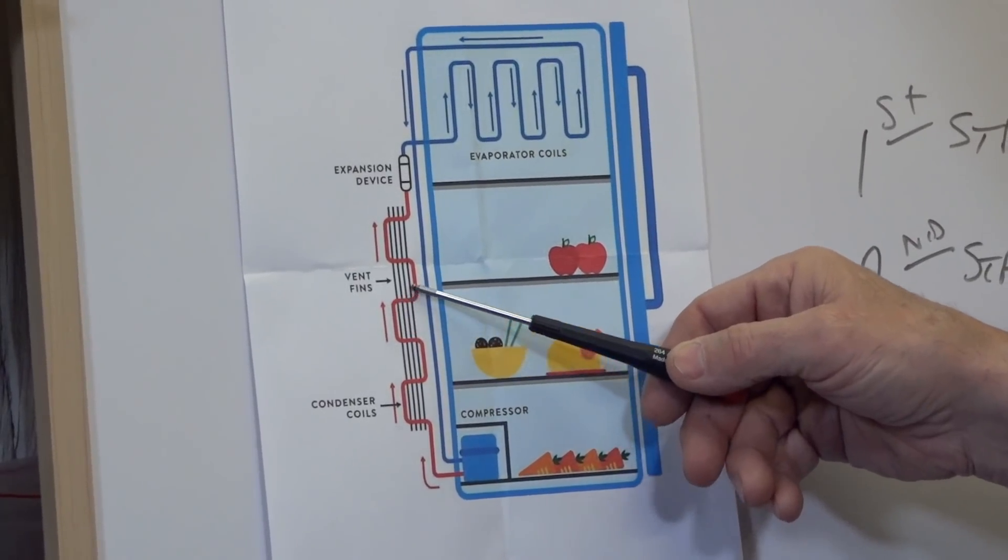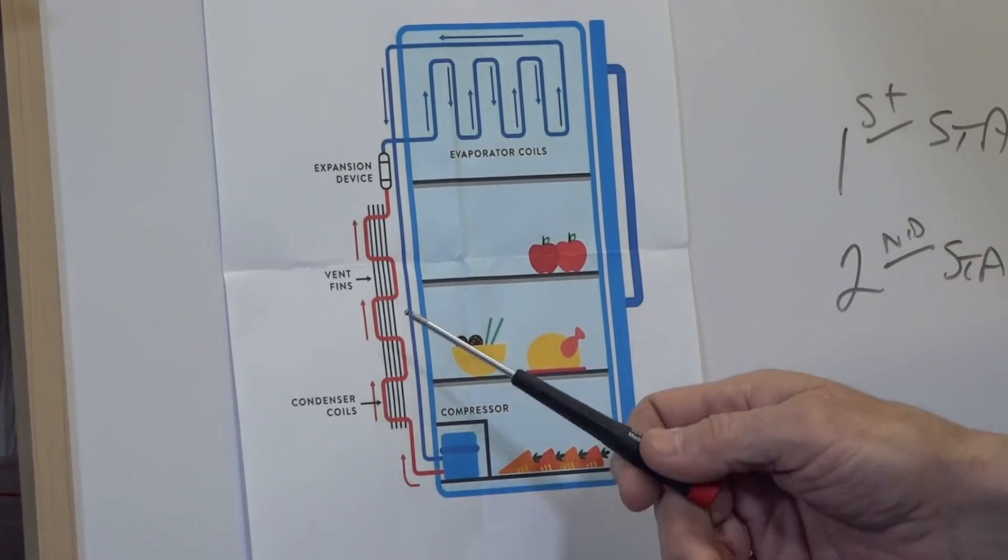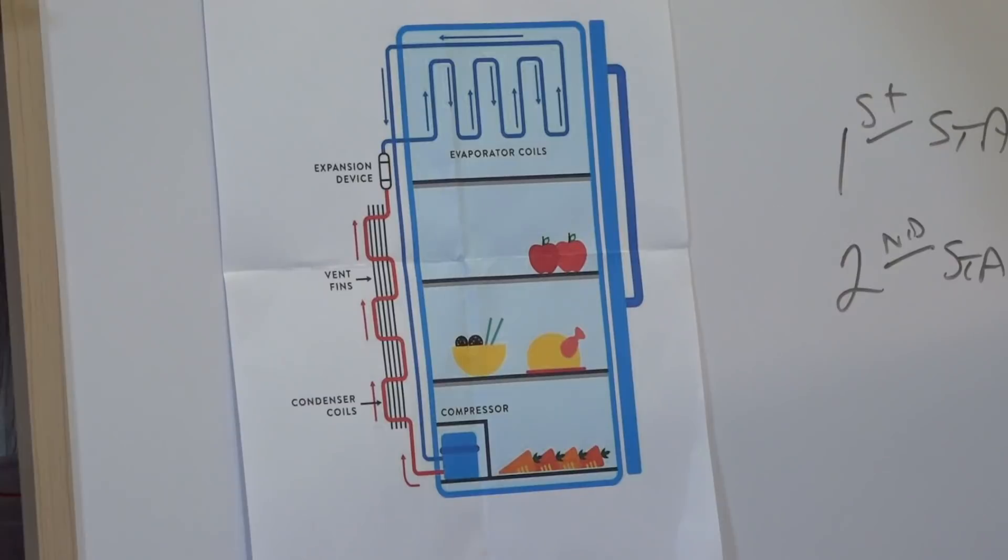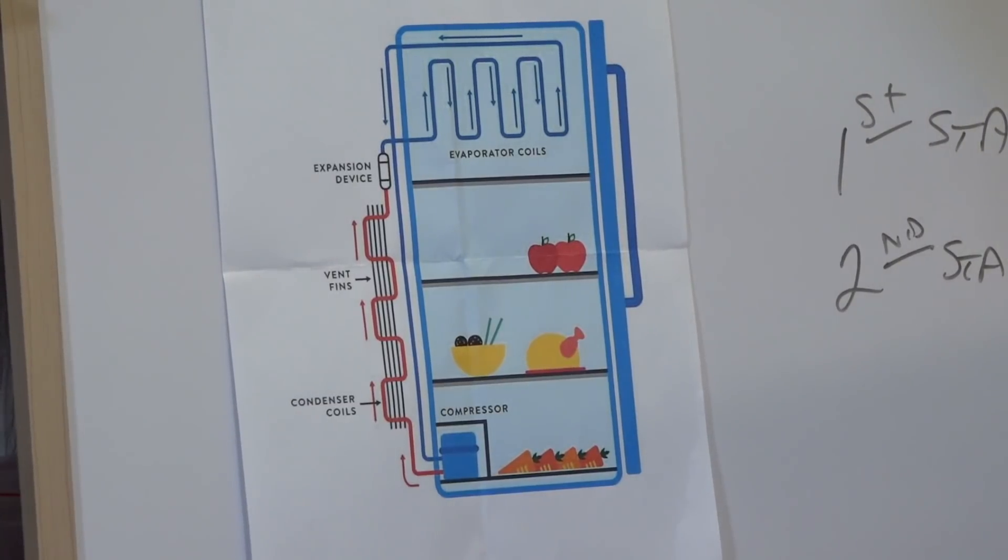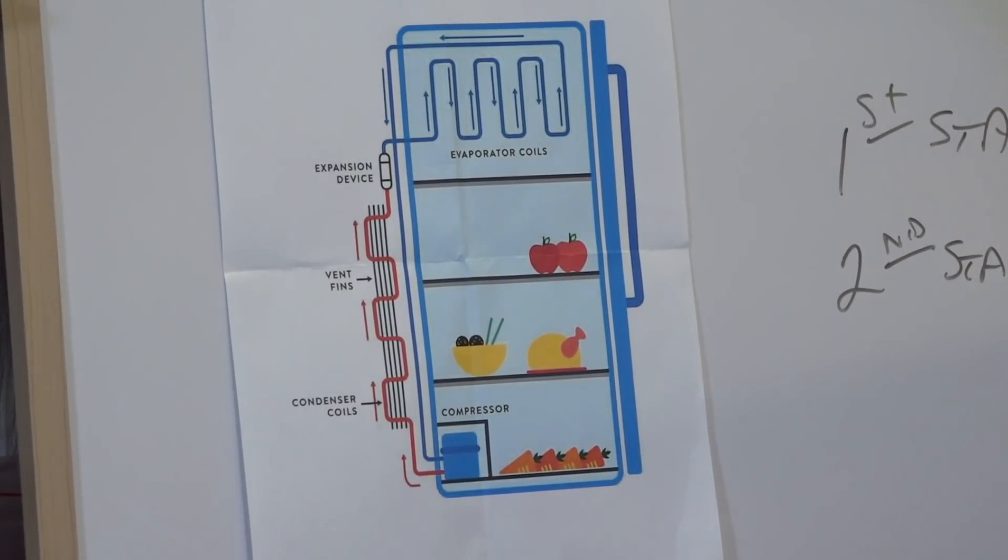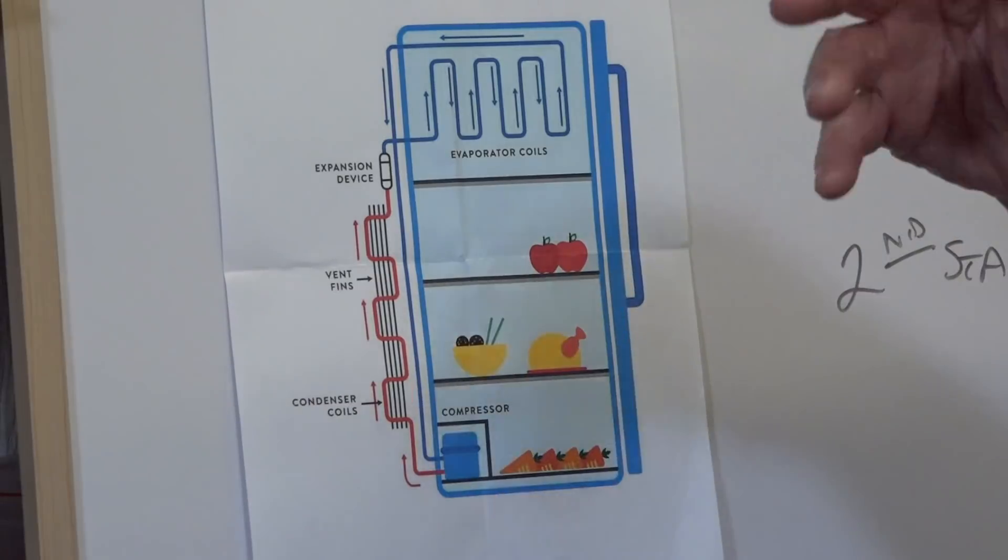So the air comes out of the refrigerator compressor at high pressure. It's in red. Now, the first thing it does is they put it through these vents. See, it says vent fins there, Kevin. And they do that to cool it. They want to cool it off a little bit. They don't want it to be hot when it gets up to the freezer compartment.